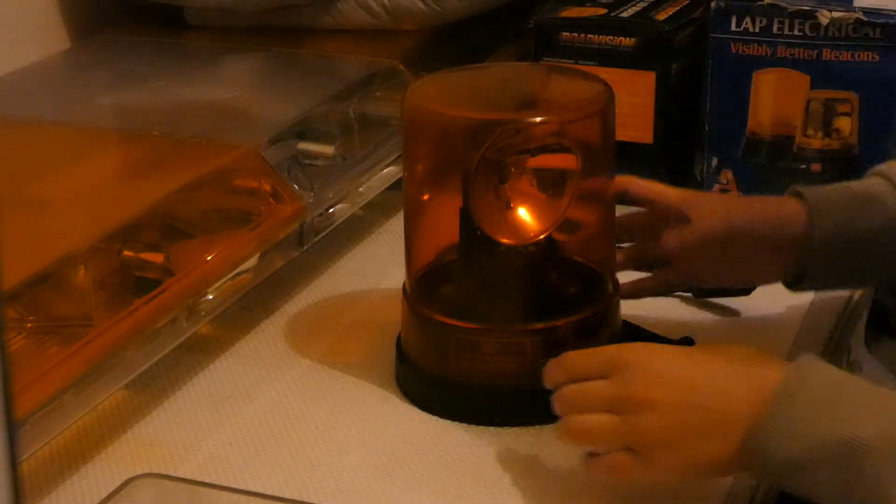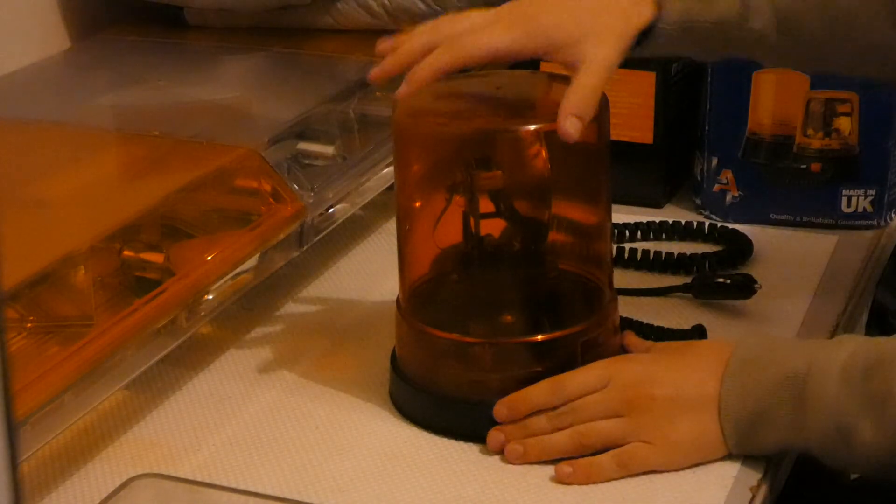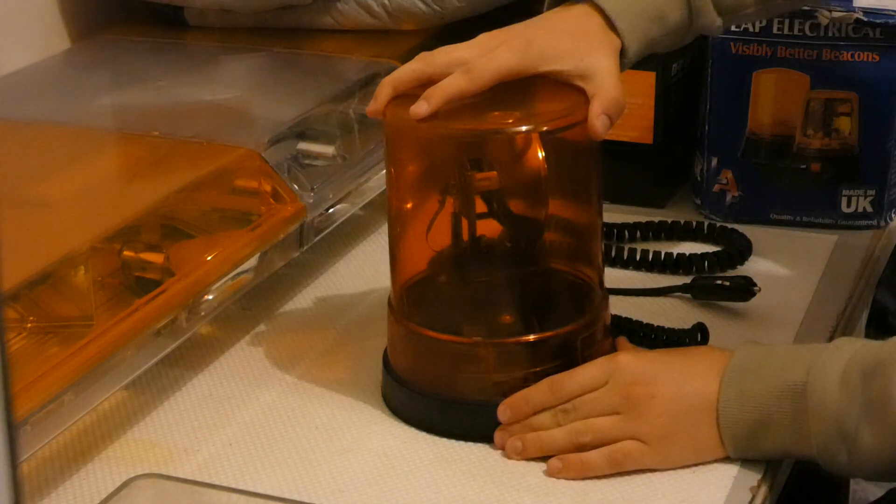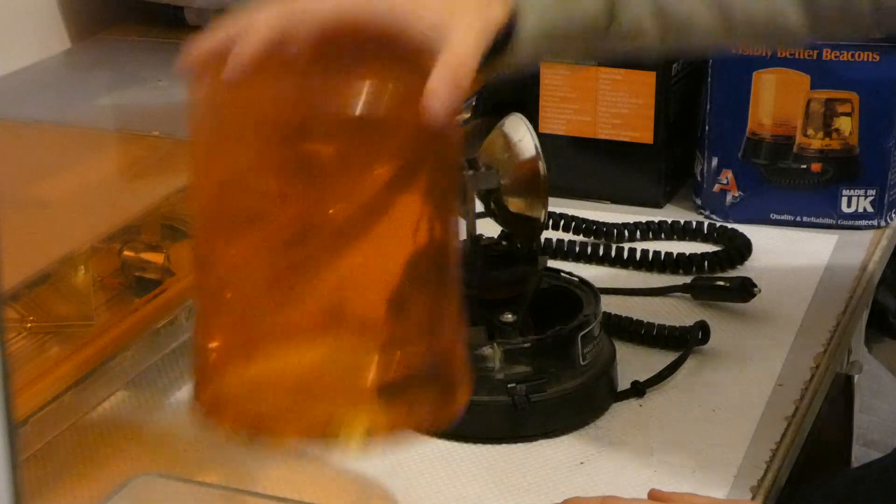So first things first, you will need to remove the outer dome. That is done by pressing on this plastic tab here and rotating the lens anti-clockwise. That's pretty simple and easy. Let's just pop that to the side.